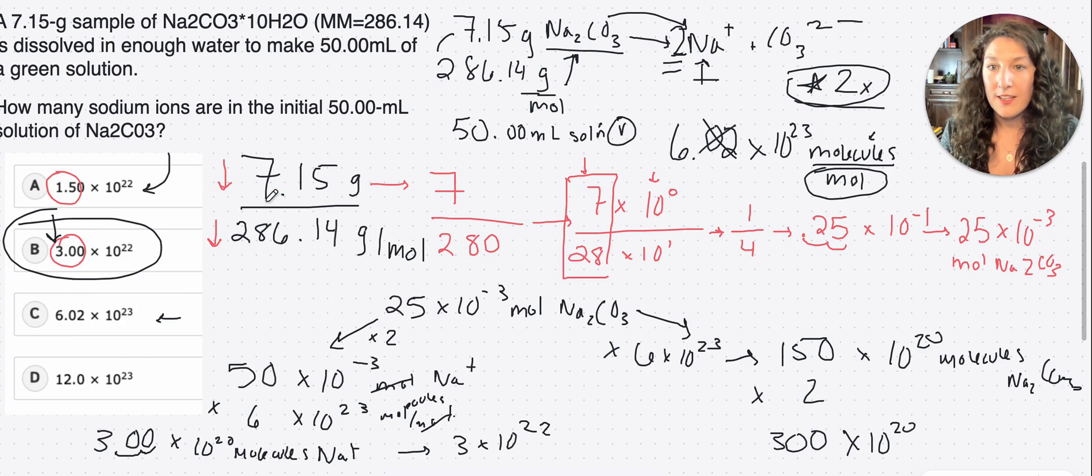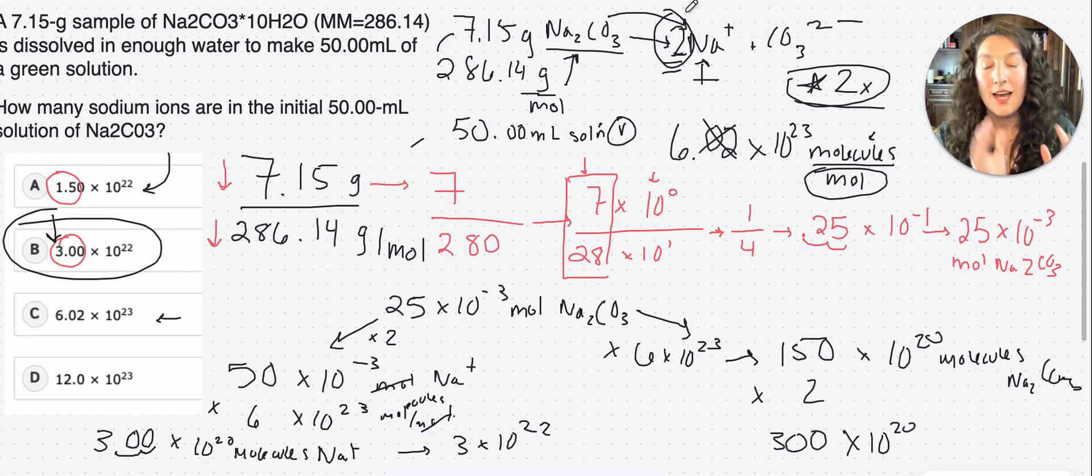That will always be an answer, right? Is the wrong molar ratio. So just make sure that in your setup step, like we did together, notice the molar ratio, write out the reaction if you have to, because that will always be a wrong answer is the wrong molar ratio, one to one instead of a one to two or vice versa.